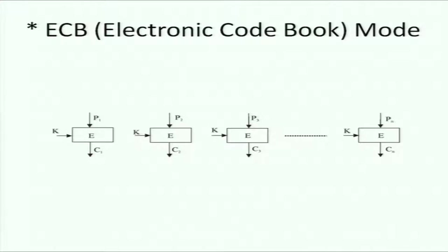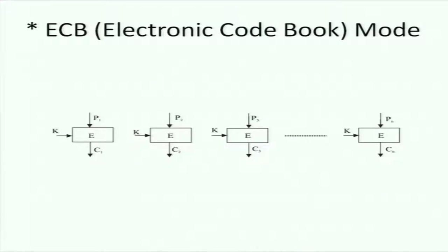We've agreed on a session key and encrypt each block independently. This is called ECB mode. Can you think of any disadvantage? If the input is the same, the output will be the same. So if C2 equals C5 and you know P2, you immediately know P5 — a known plaintext attack.